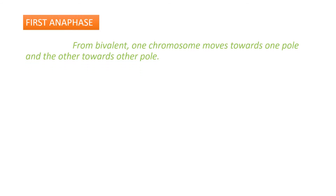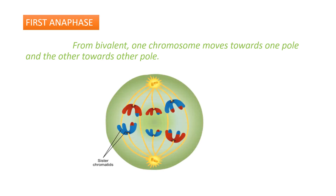The next stage is anaphase I. During this stage, from each bivalent, one chromosome moves towards one pole and the other towards the opposite pole — there is separation of homologous chromosomes. This is why the ploidy of the daughter cells is half that of the parent cell. In the image, you can see the separating homologous chromosomes; if you see the red chromosome there is a blue part, and if you see the blue chromosome there is a red part — the reason for this is crossing over, which occurred during pachytene stage of prophase I.